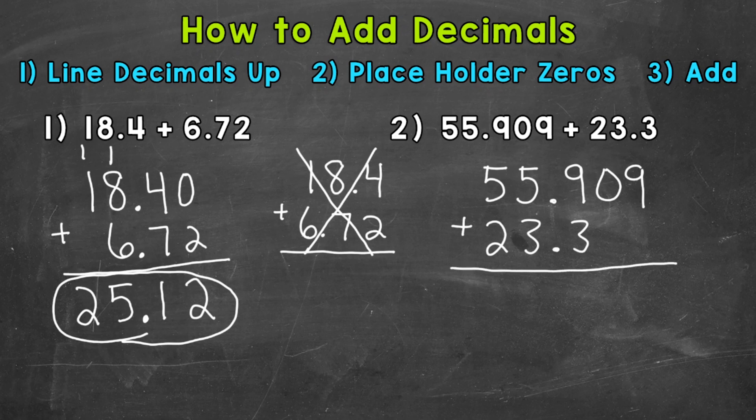So, we can use placeholder zeros to line this up a little better. So, we can place some zeros to the right of 23 and 3 tenths. Remember, zeros to the right of a decimal do not change the value. That's an equivalent decimal. So, we can do that. Our last step, we add.